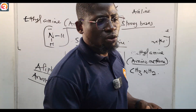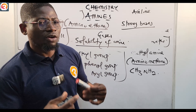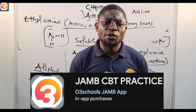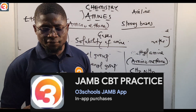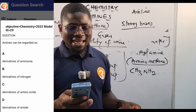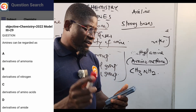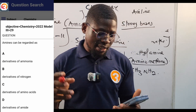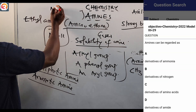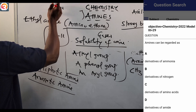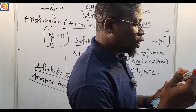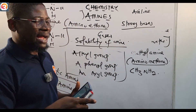This has been an introductory class to amines. In the next class we will cover classification of amines. Now let us answer the question from the app — 2022 question number 29: amines can be regarded as what? The answer is A: derivatives of ammonia, because amines are derived from ammonia when one or more hydrogen atoms are replaced by an alkyl or aromatic group.